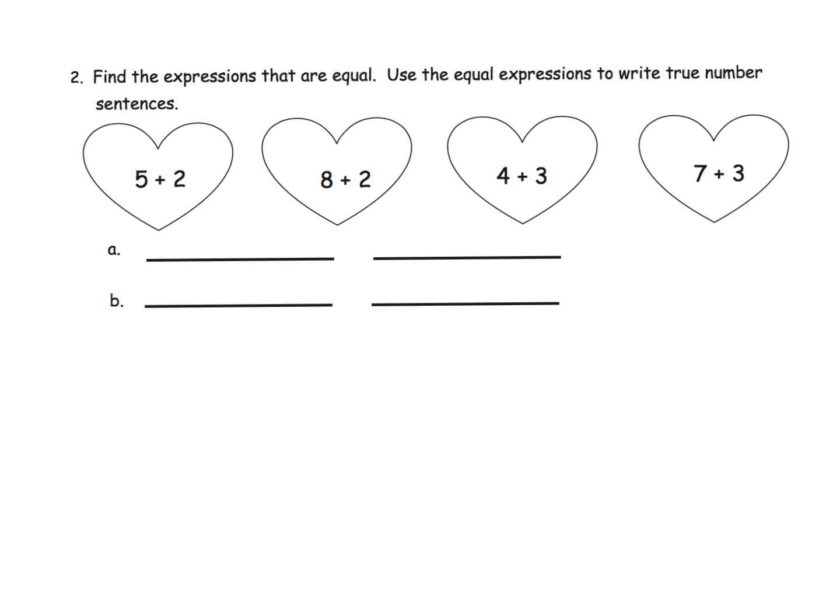The last problem in this video is more of the same, though I found the hearts question easier than the dominoes question. The idea is to find the numerical expressions that match and make true equations. Let's see, five plus two. I'm going to use my count on method. Five, six, seven. So this is seven. And then on this one, I'm going to say eight, nine, ten. So that's a ten.